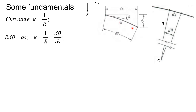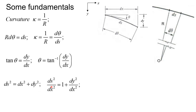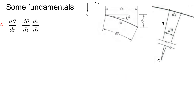For small infinitesimal dx, we can approximate ds as a straight line, giving tan θ = dy/dx, and therefore θ = tan⁻¹(dy/dx). Since θ is in terms of x and curvature requires differentiating θ with respect to s, we use the chain rule, requiring a relation between ds and dx. Using Pythagoras: ds² = dx² + dy², giving ds/dx = √(1 + (dy/dx)²).